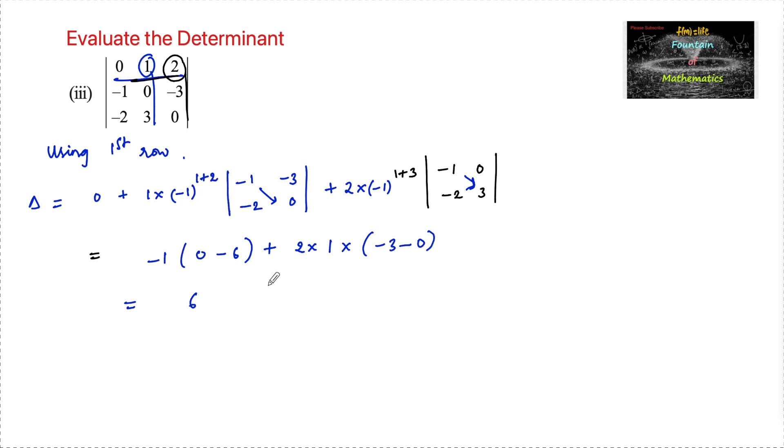And here, 2 times 1 times -3 is -6. 6 plus -6, that is 6 minus 6, the determinant value is 0. So here we can say the determinant value is 0.